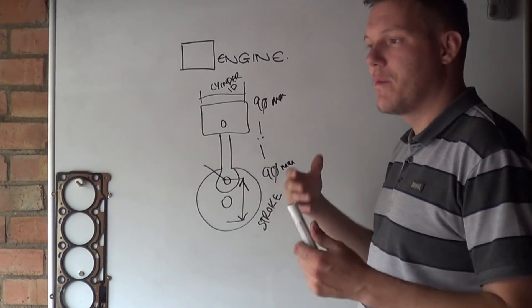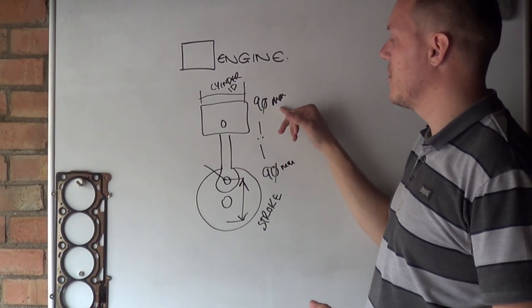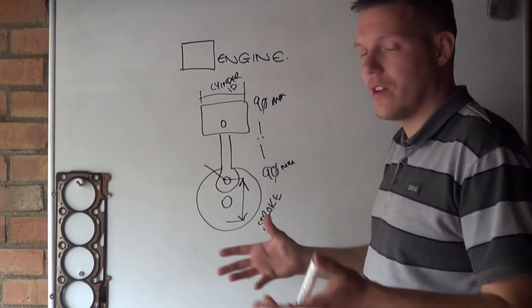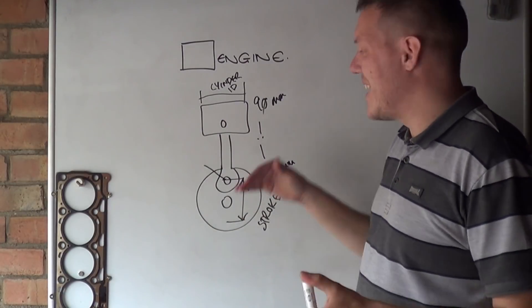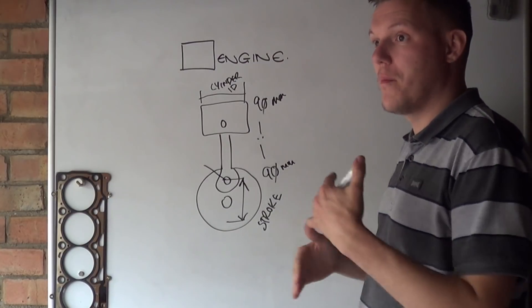If they are the same, then we call it a square engine. There is slight deviation, so if this is 90.1 and this is 90 bang on, we'll still call it a square engine, it's as close as Danny. Under-square and over-square are deviations from these numbers, either making it top heavy or bottom heavy.